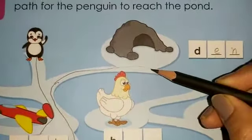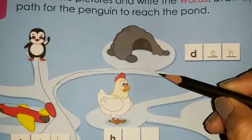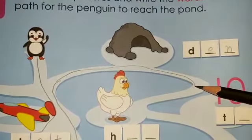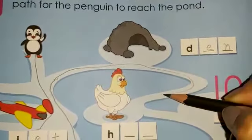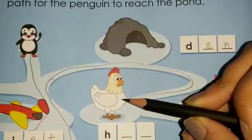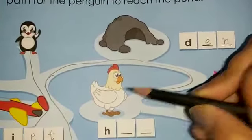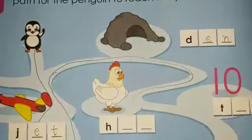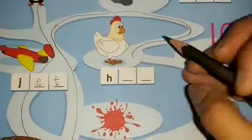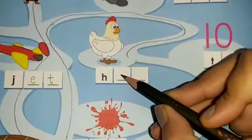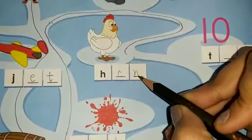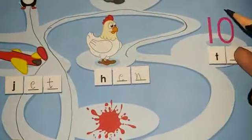Moving further, the penguin moves further and reaches here. What is this? This is a hen — H-E-N, hen. So we are going to write down E-N, hen.